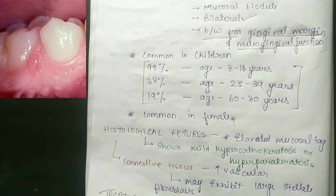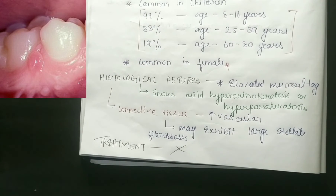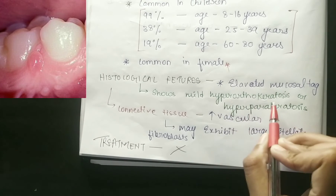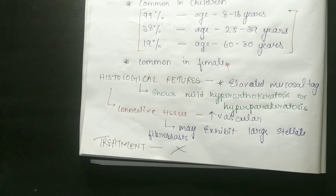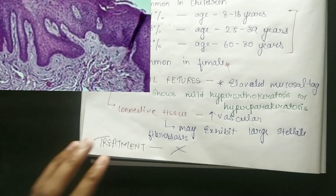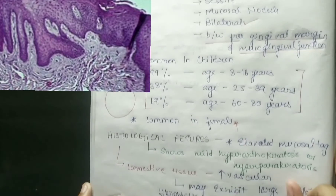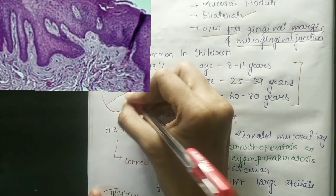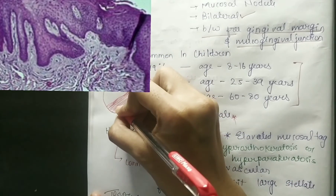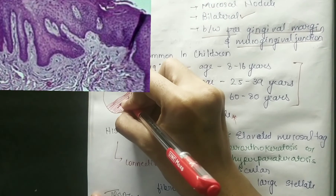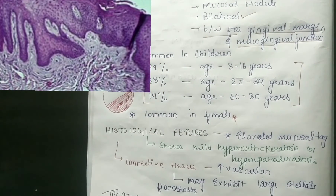Histologically, retrocuspid papilla shows mild hyperorthokeratosis and hyperparakeratosis. In the connective tissue, it may exhibit large stellate fibroblasts. These large stellate fibroblasts can be seen in the connective tissue on histologic examination.